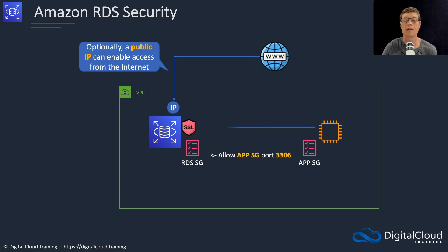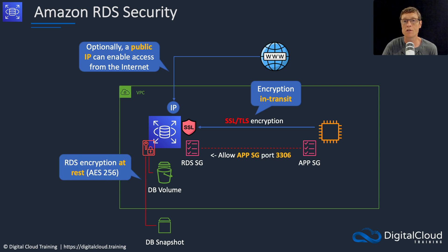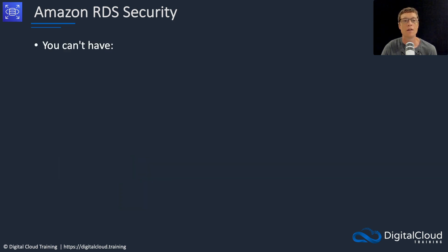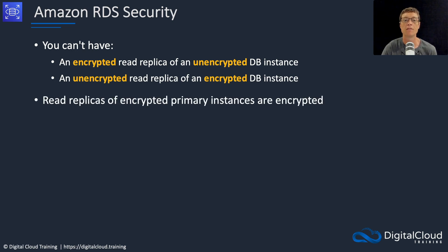We can also use SSL/TLS encryption, so we have encryption in transit as well as encryption at rest. When we encrypt our database, the EBS volume used by RDS will be encrypted, and any snapshots you create will also use the same key — the snapshot will have the same key as the database volume. Encryption at rest uses AES-256. You can't have an encrypted replica of an unencrypted database instance, or an unencrypted replica of an encrypted database instance. Your read replicas will have the same encryption status as the primary they are a replica of.